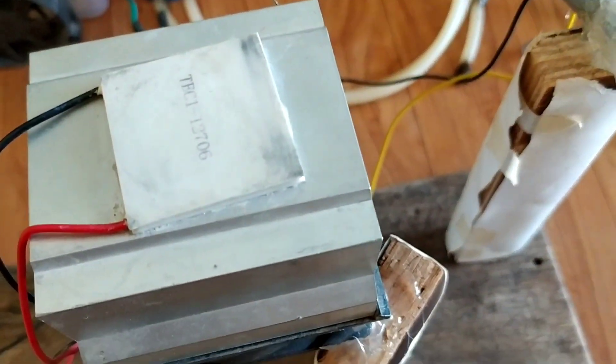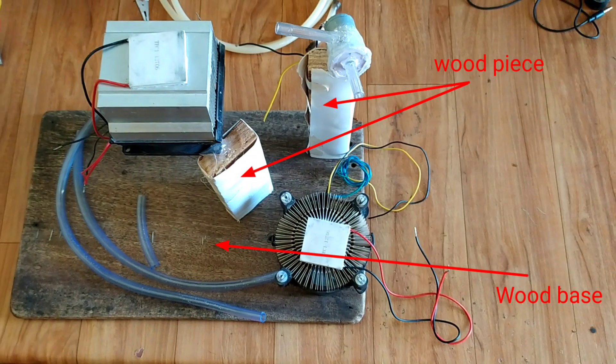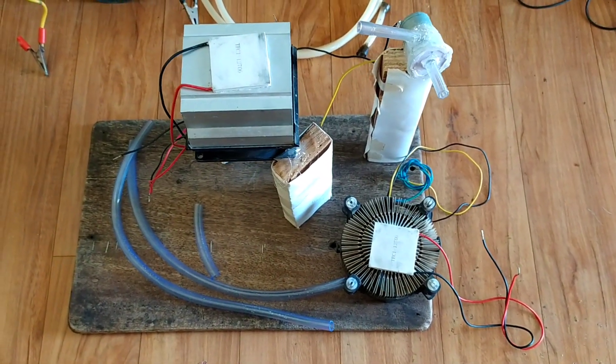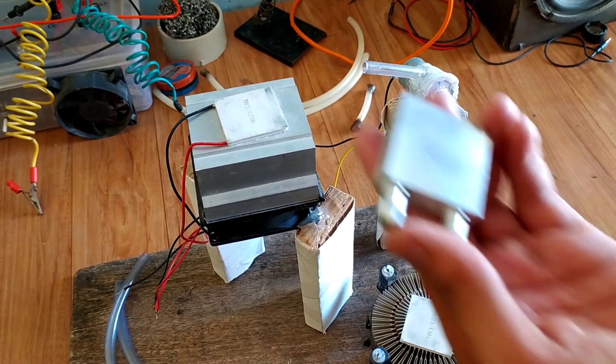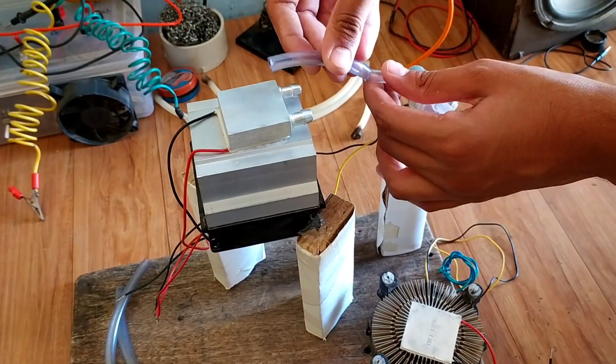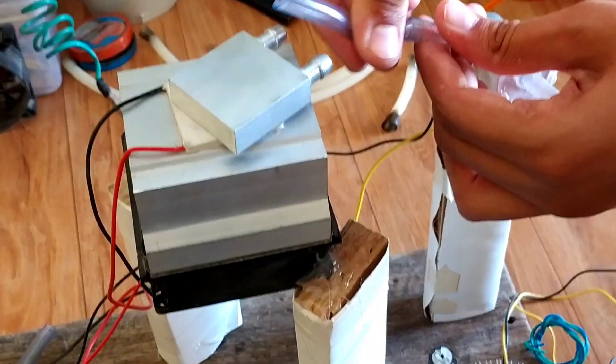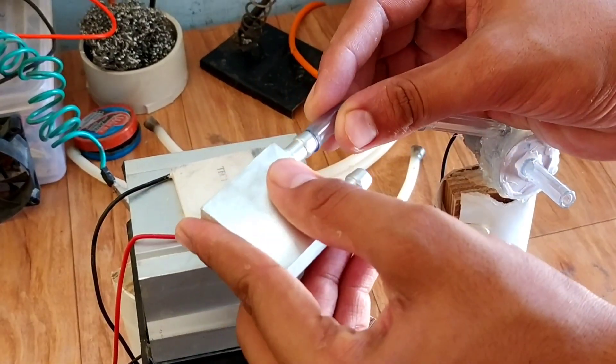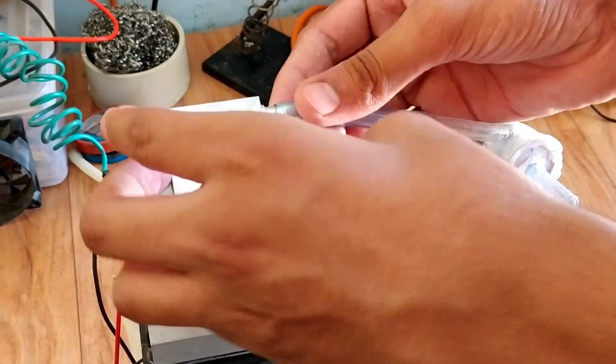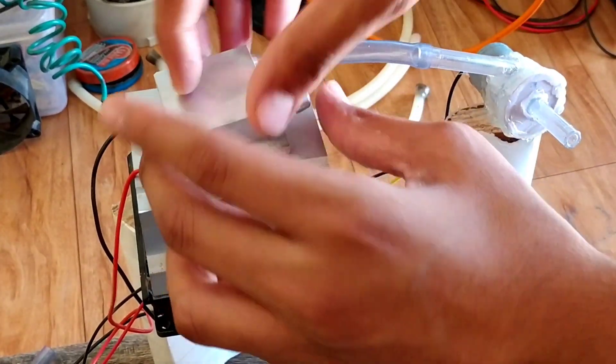To arrange everything I use wooden base and some wooden pieces. Now connect all the pipes according to diagram. Diagram is given in description. First we need to take water from bottle and feed it into water block, then take it out.